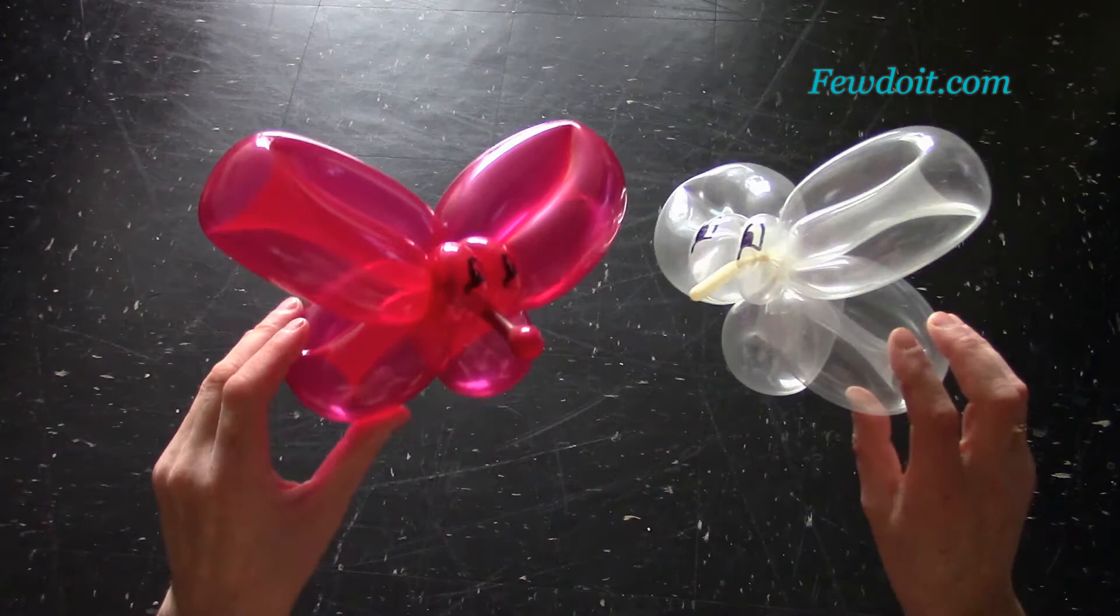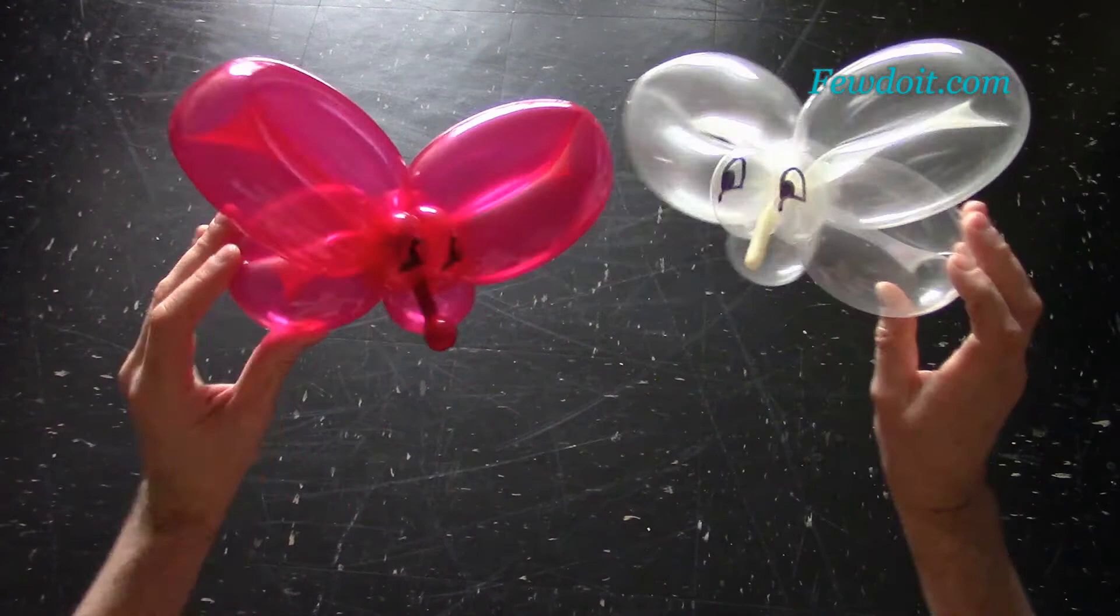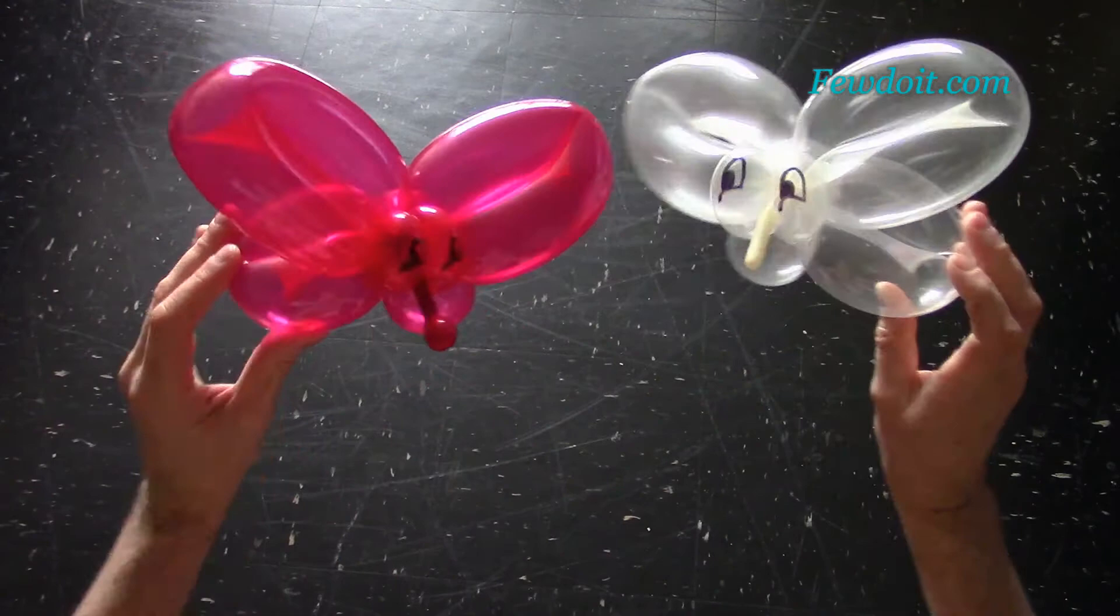We can use different color balloons to make mosquitoes. Here is an example of a mosquito made of clear color balloon. Also we can use dark green or purple balloon to make a fly.